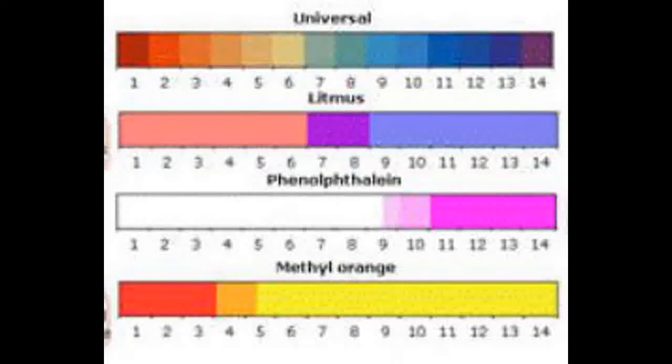Litmus solution is an indicator. In acidic conditions, it is red. In alkaline conditions, it is blue. And in neutral conditions, it is purple.